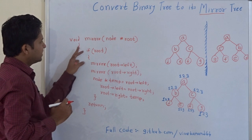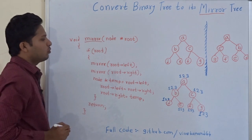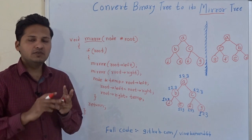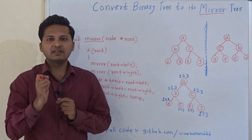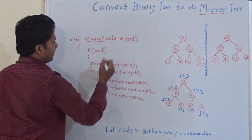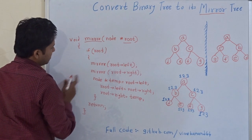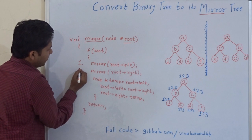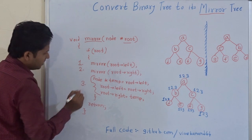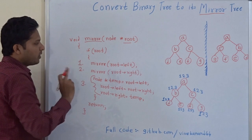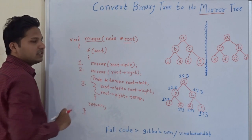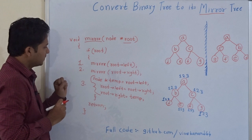The function name is mirror. In this code there are three steps which are going to be executed at every node of the given binary tree. The root of the tree is passed. The first step is to pass the left child of the node to the mirror function itself — this means it is a recursive function.